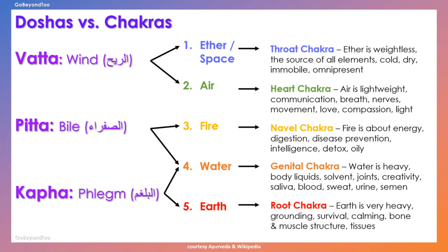Kapha, last but not least, is made up of the earth and water elements. It supports the root chakra and also the genital chakra. The earth element is very heavy. It's grounding — it's about survival, calming, bone and muscle structures, and tissues as well.